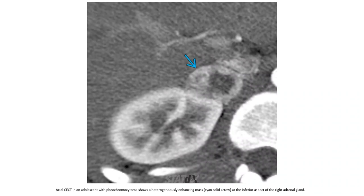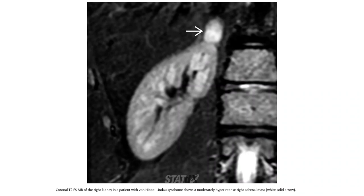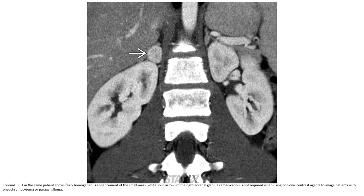Contrast-enhanced CT in an adolescent with pheochromocytoma shows a heterogeneously enhancing mass at the inferior aspect of the right adrenal. T2-weighted MRI of the right kidney in a patient with von Hippel-Lindau syndrome shows a moderately hyperintense right adrenal mass. Contrast-enhanced CT in the same patient demonstrates fairly homogeneous enhancement of the small right adrenal pheochromocytoma.